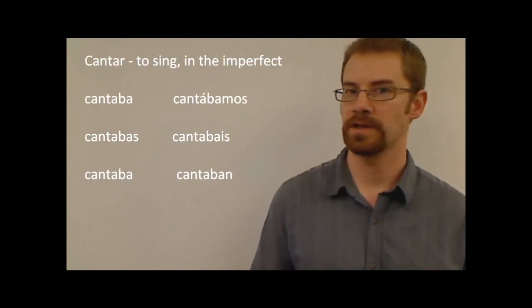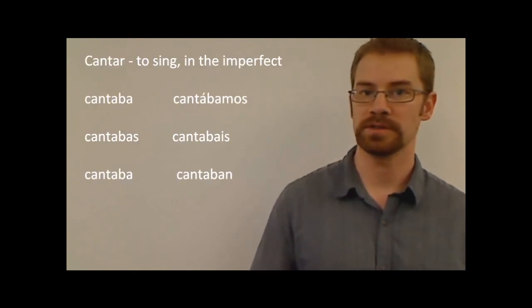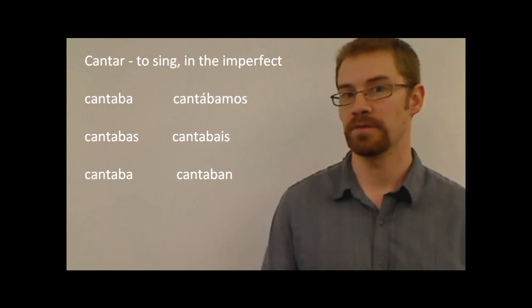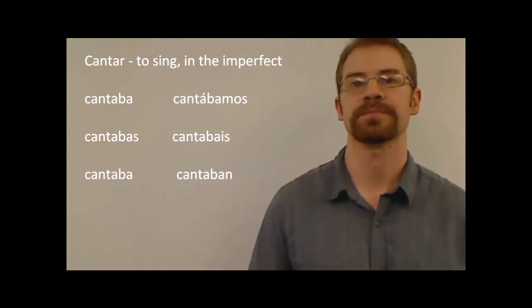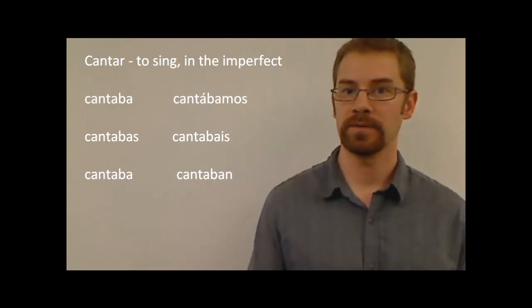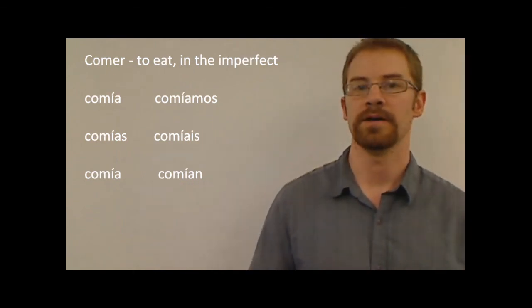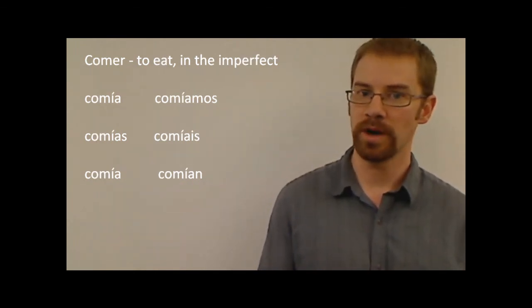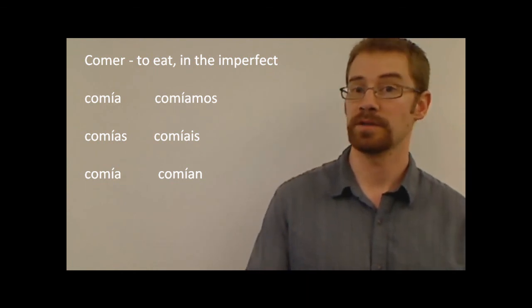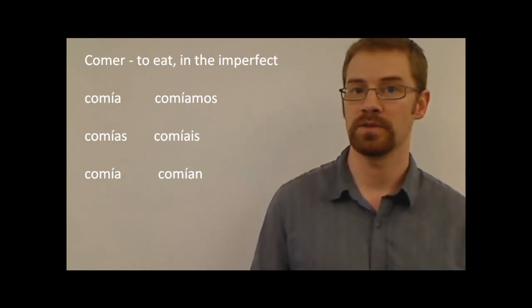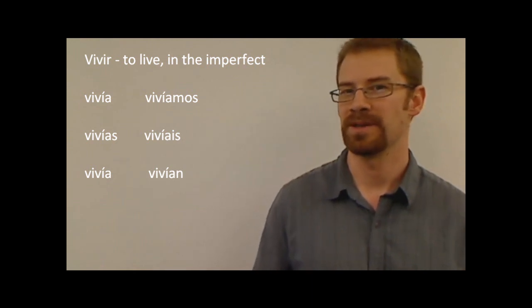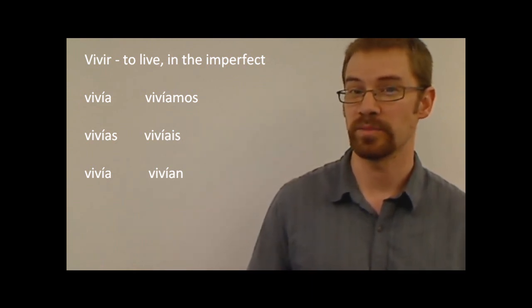So, hopefully you got most of those right. Again, it's not too hard. If you can memorize cantar and vivir, or cantar and comer, the endings for ER and IR verbs are exactly the same in the imperfect. And the AR verbs are all the aba stuff. Just study them, memorize them. And then, take a look at my other video on the imperfect so you can see the three irregular verbs in the imperfect. Imperfect is a lot easier than the preterite. Let me know if you have any questions, and I'll get back to you.